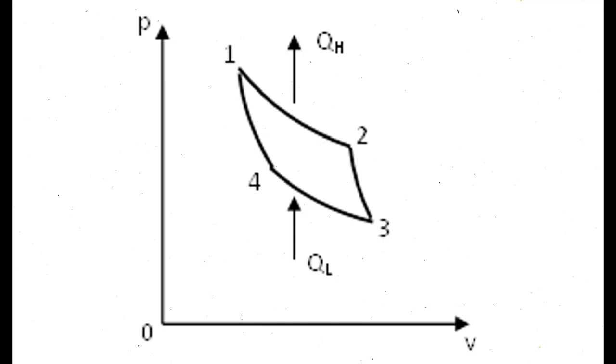Process 2 to 1 is reversible isothermal compression at TH equals constant. During this process heat is rejected. Gas is compressed reversibly at the constant temperature TH.